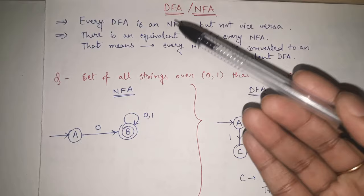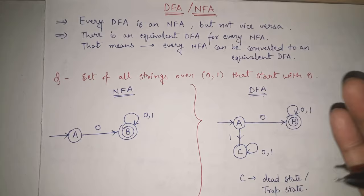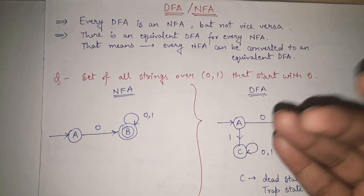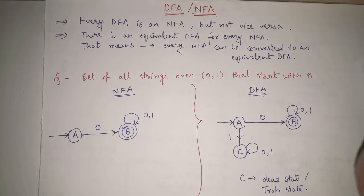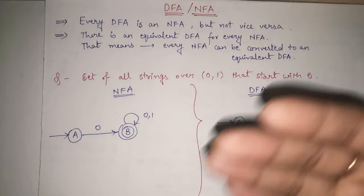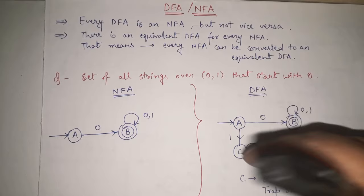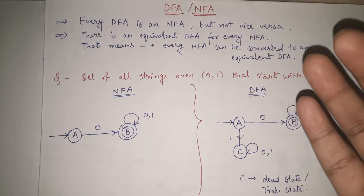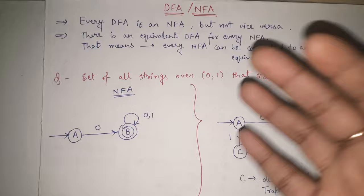DFA stands for Deterministic Finite Automata and NFA stands for Non-Deterministic Finite Automata. In my previous videos on TOC, we have already discussed different types of grammar — Type 0, Type 1, Type 2, and Type 3 — in detail. If you haven't visited those, I'd recommend doing so first; I'll provide the link in the description.